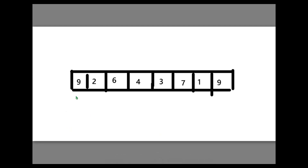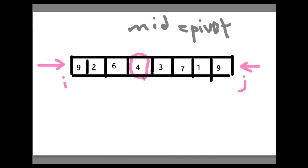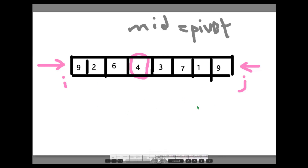Suppose we have an array of integers 9, 2, 6, 4, 3, 7, 1, 9 and the pivot is the middle element, which in this case is 4. We come from the left side. If the element is greater than pivot we stop there and change the side to the right side. If the element is less than the pivot element, we stop there and swap the two numbers on the right and left hand side, and we repeat the process.